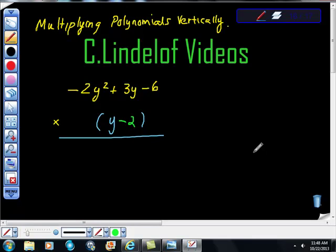I'm asked to multiply negative 2y squared plus 3y minus 6 times the quantity y minus 2. First of all, I can remove these quantity signs because there's no exponent here and there's no number out in the front, so I can just remove them.